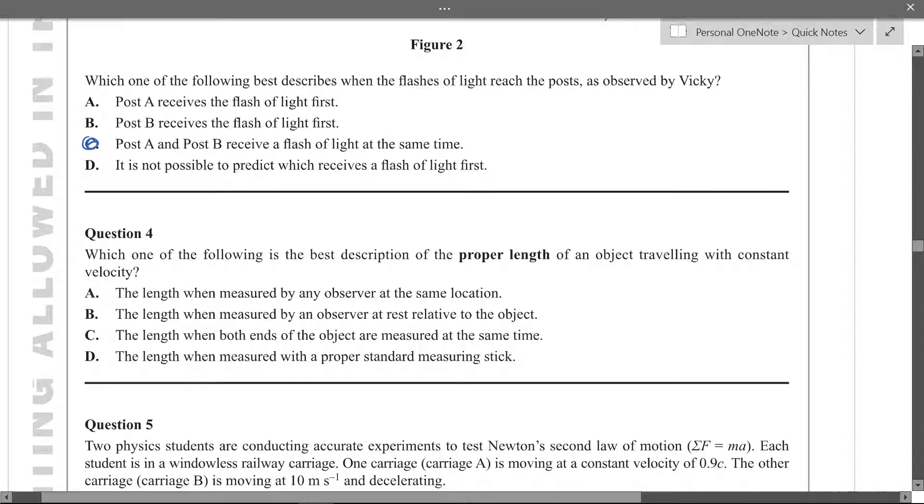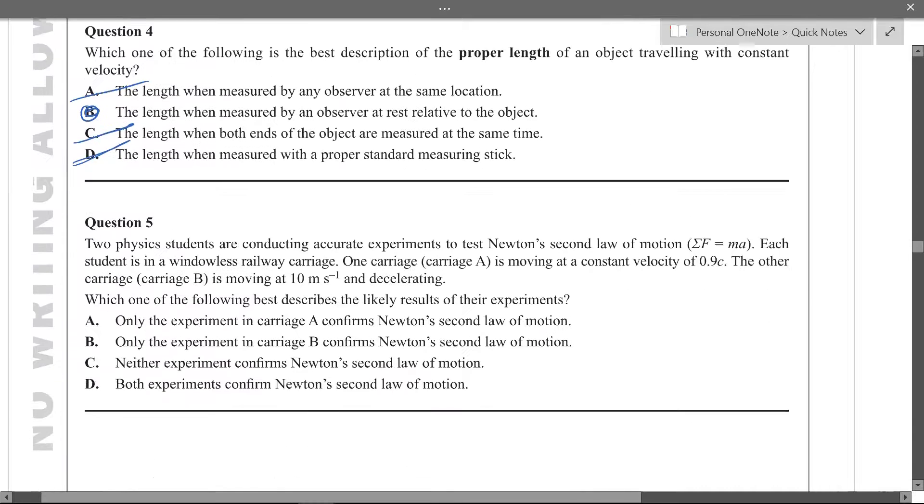Which of the following is best description of proper length? So trial and error. The length measured when an observer is at the same location, it's not true because you could be at the same location and moving. Length measured by an observer at rest relative to the object that is true but we'll check the other ones. The length measured when both ends of the object are measured at the same time, it doesn't really make sense. The length measured with a proper standard measuring stick, that's definitely not it.